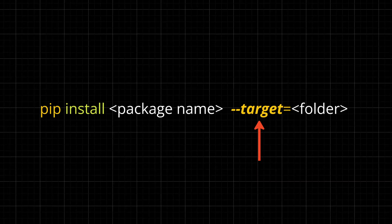I'll be showing you how to do this on Windows, but the same thing you could do on Mac or Linux. The command line argument I'm talking about is "--target", and then you pass in the path where you want pip to install the package. You can specify any path you want, but we'll be using a special path that the Python interpreter in Blender actually knows about.